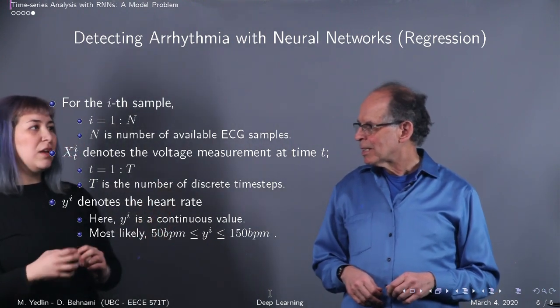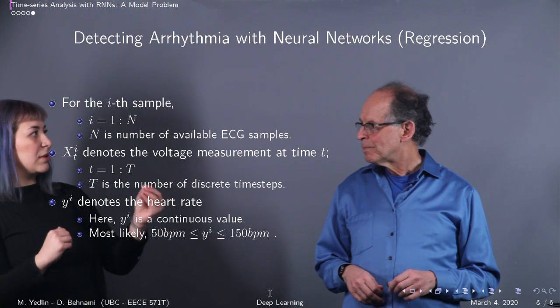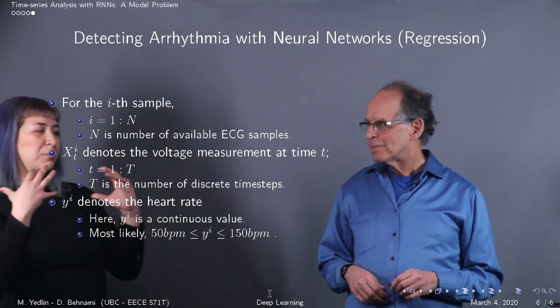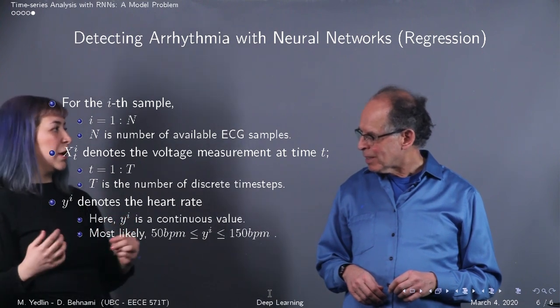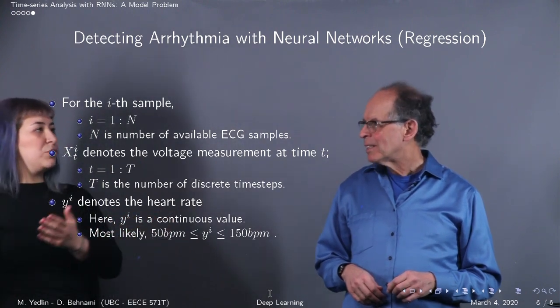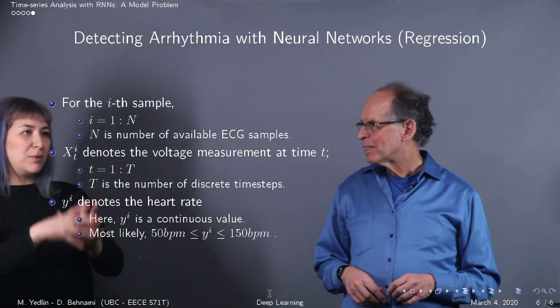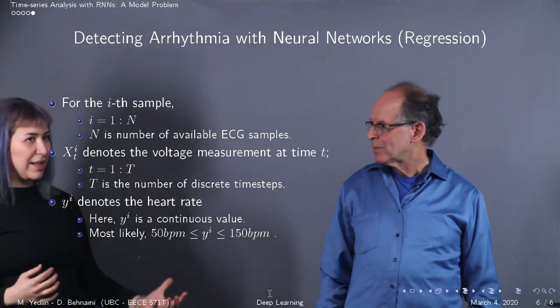And then in this case your output is going to be a continuous value. So you're probably going to optimize this with something like a mean square error or an absolute error rather than cross entropy, which you would do in case of the binary classification. With the same setup you can do regression or classification is the point.